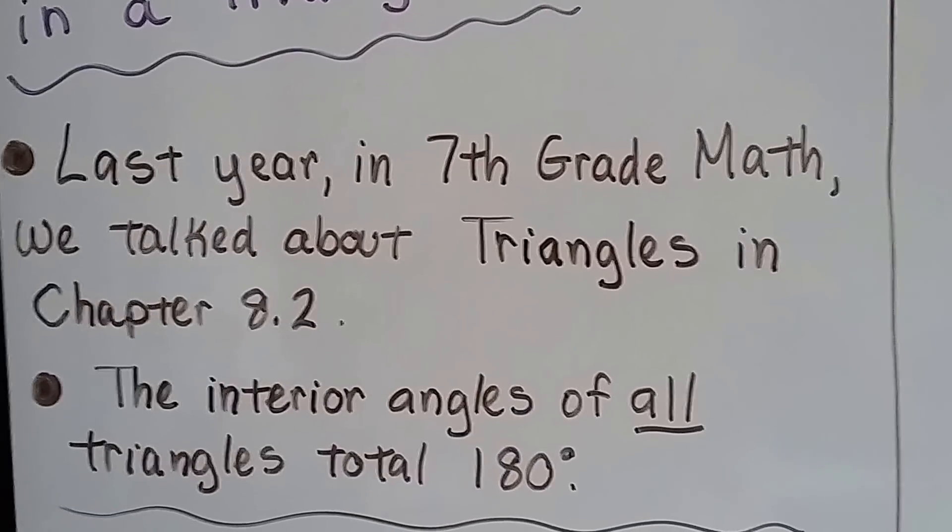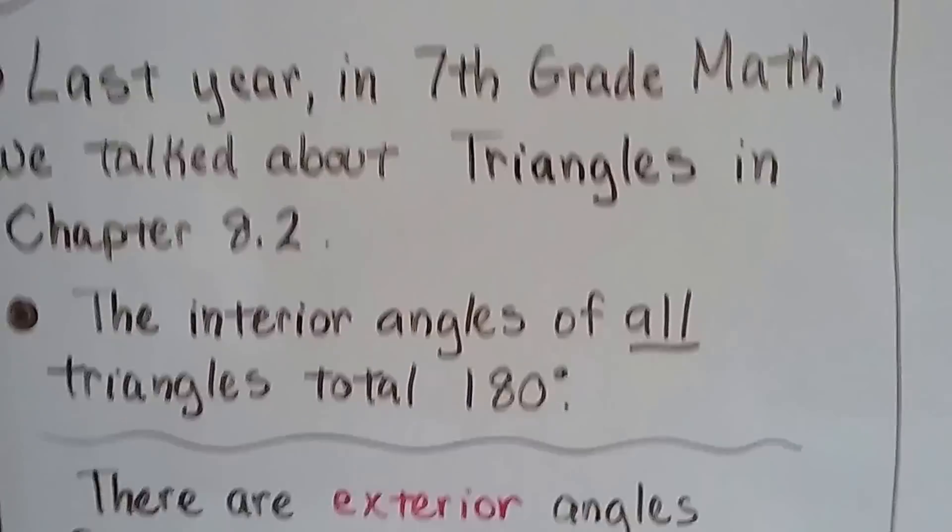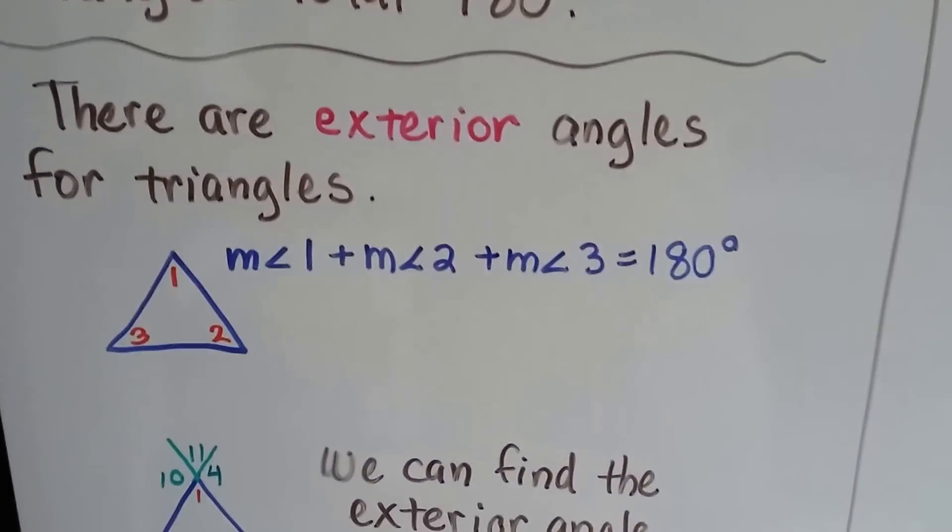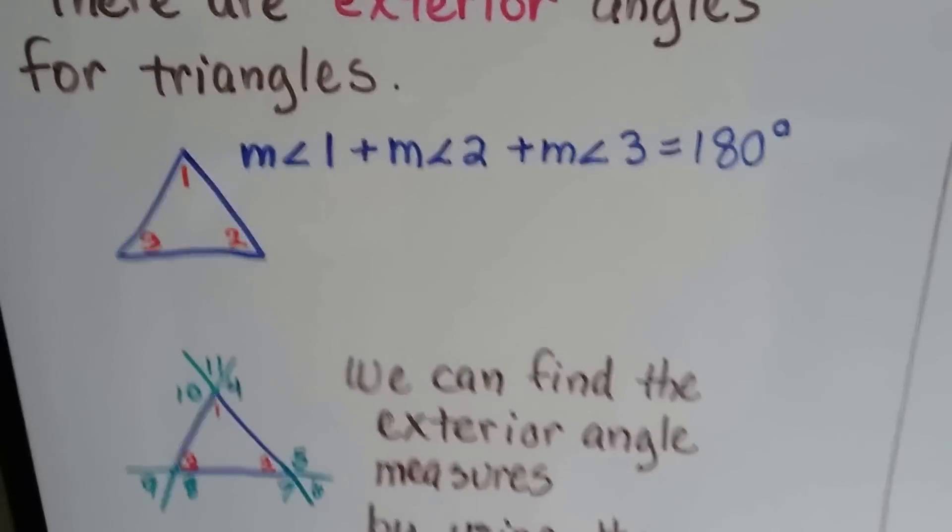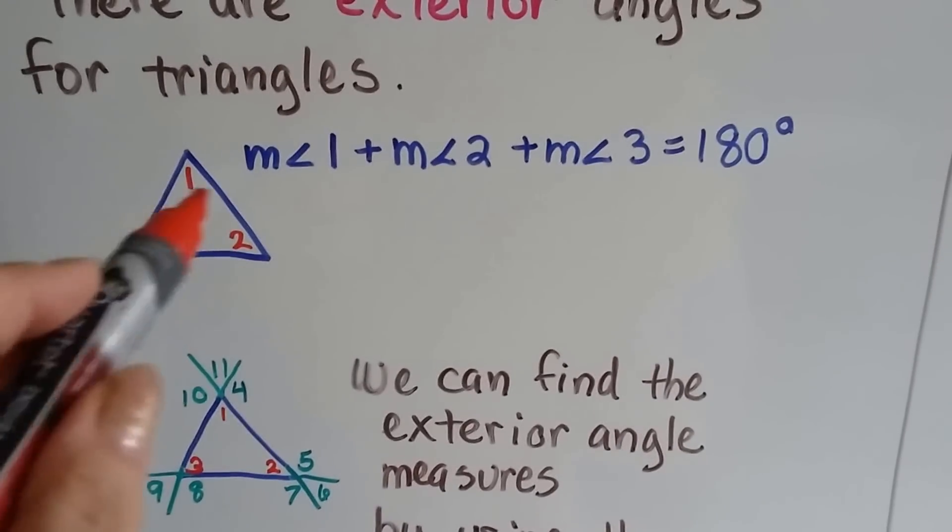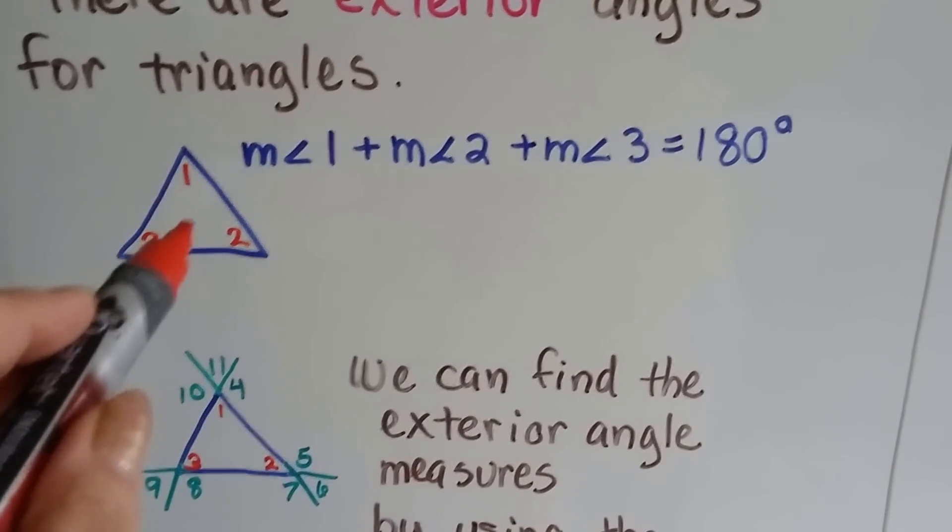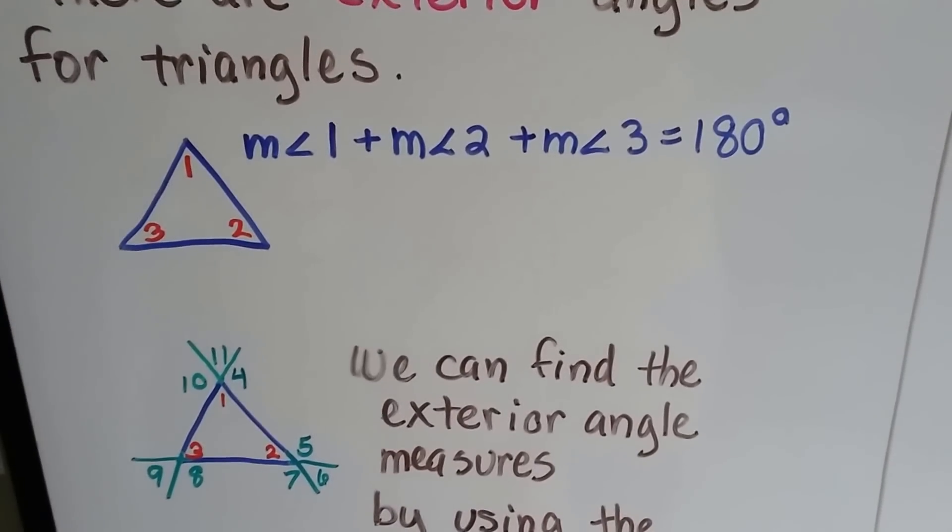We learned that the interior angles of all triangles total 180 degrees. Well, there's exterior angles for triangles, and if the measures of the interior angles total 180 degrees, and we have an equilateral triangle.